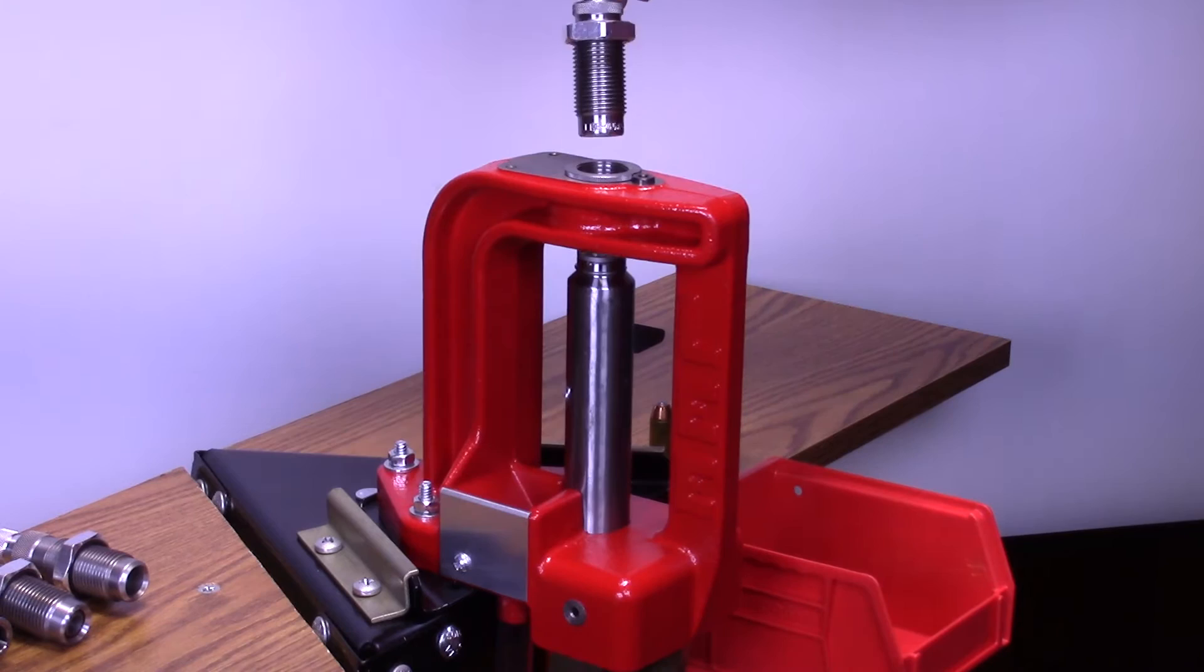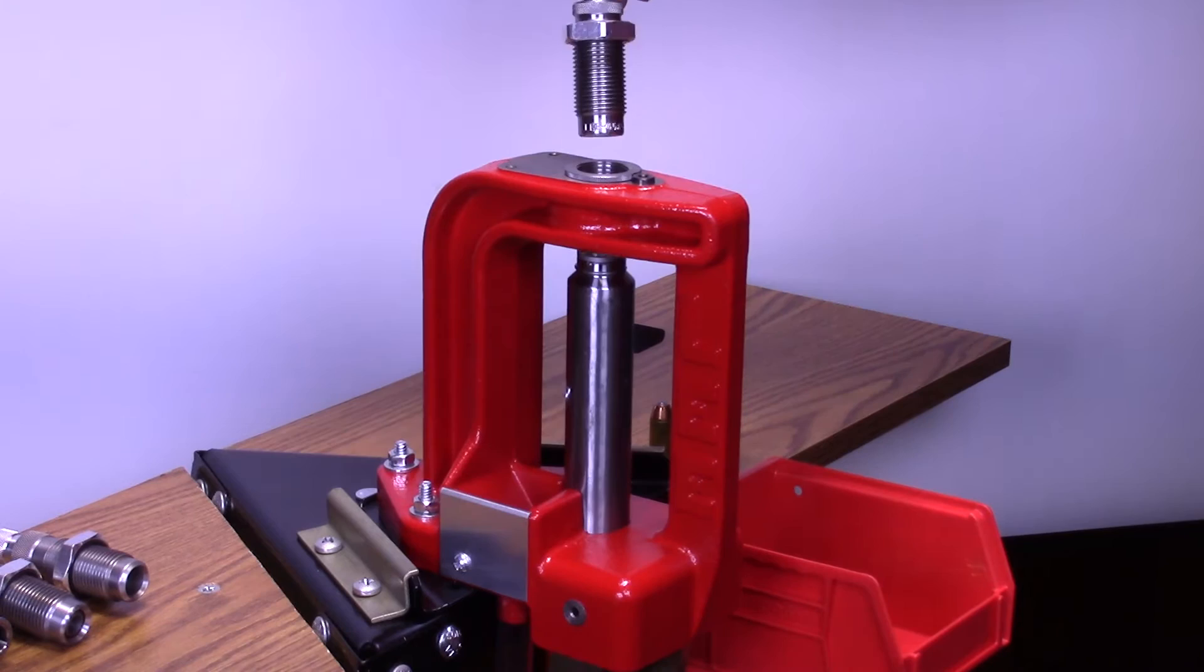With the ram at the top of the stroke, screw the Lee carbide factory crimp die into the press until it just touches the shell holder.